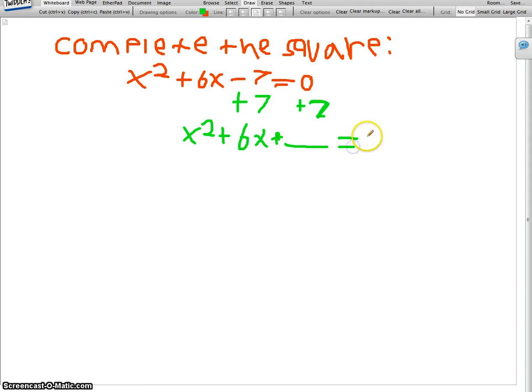Then equals negative 7 plus blank. So the first thing you do is use the equation b over 2 squared.